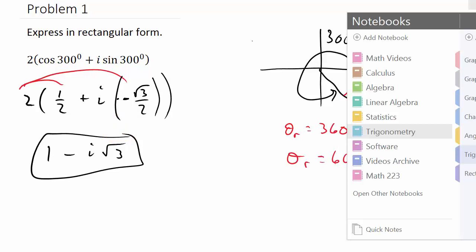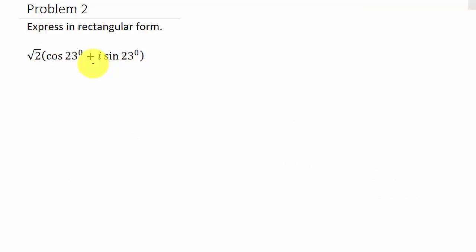All right, so let's look at another one. All right, so how about this one? All right, so this is going to be square root of 2 times, and then we have cosine 23 plus i sine 23. Now, 23 is not a special angle.